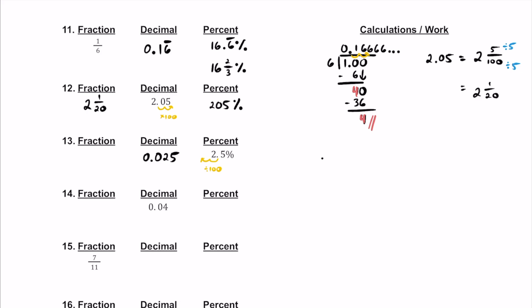We read this as 25. What place value is the 5 in? That's in the thousandths place. So that's going to be 25 over 1,000. Then we can go ahead and see if we can simplify this. We can divide by 25 top and bottom. If we do that, we should get 1 over 40. So the simplified fraction here is 1 fortieth.